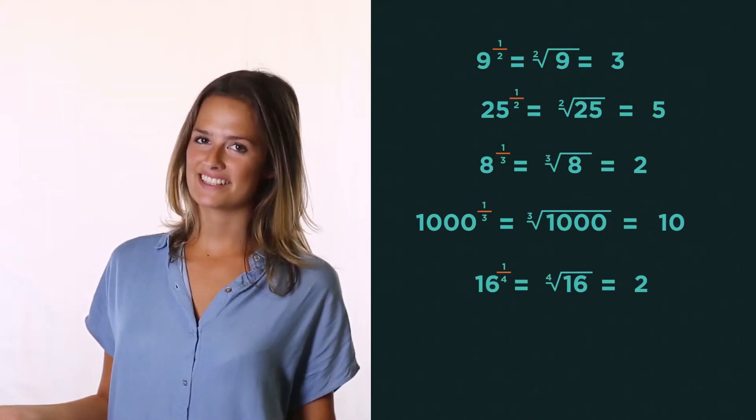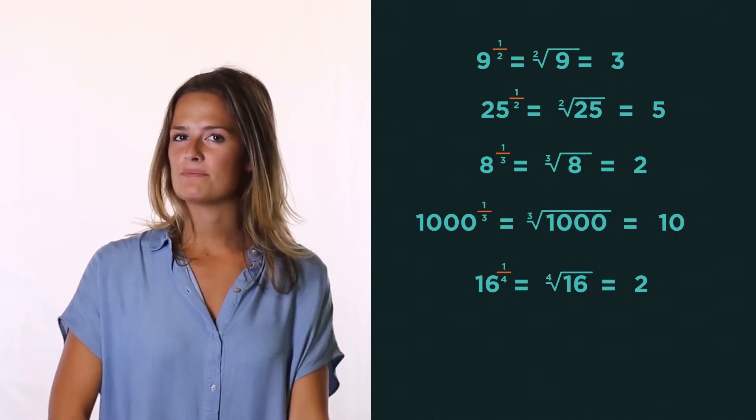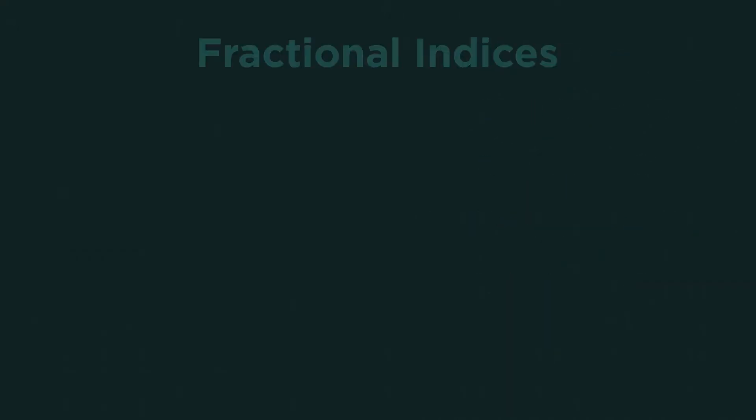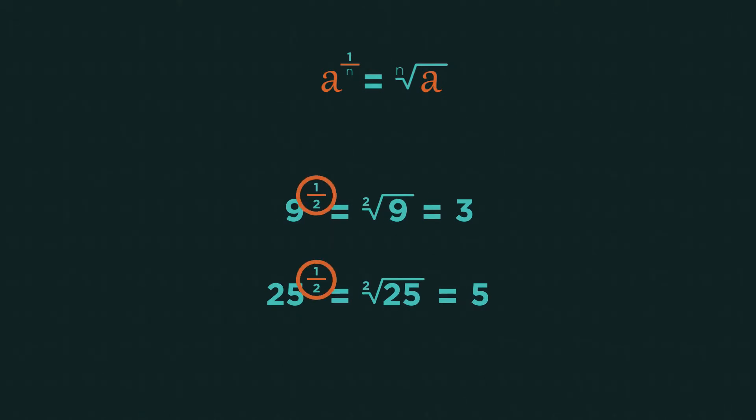Have a look at these examples. What do you notice about the denominator? Hopefully, you can see that the denominator is the root of the number. So because these are a half, it is square root. A power of a third means the cube root.